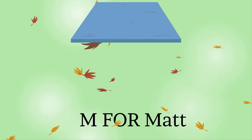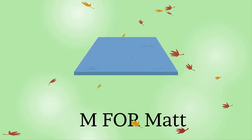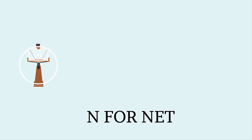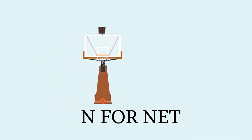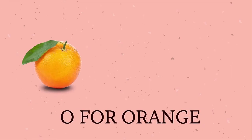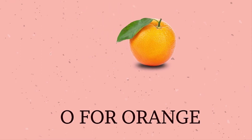M is for mat, m-m-mat. N is for net, n-n-net. O is for orange, o-o-orange.